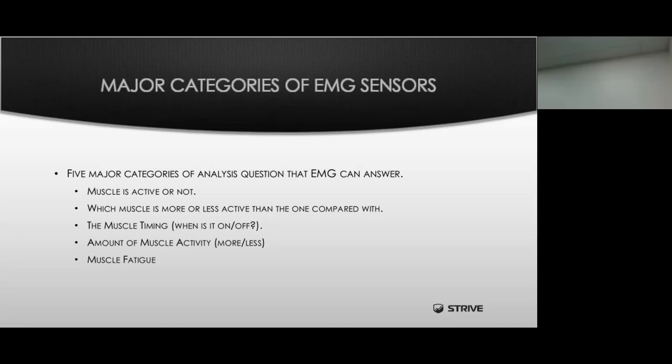The first category answers whether the muscle is active or not — when an individual contracts a muscle, we can see whether the muscle is being activated. Second, we can compare which muscle is more or less active than another — whether comparing an agonist and antagonist, or within the same muscle group, such as identifying which of the three hamstring muscles is being contracted. Third, we look at muscle timing: when is it on, when is it off, how long is it on, and at what point does it fatigue or shut off?